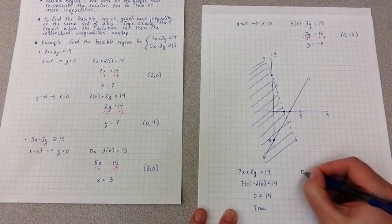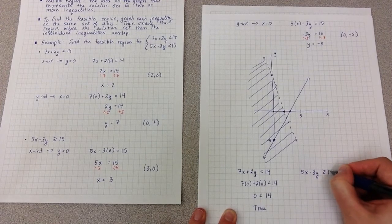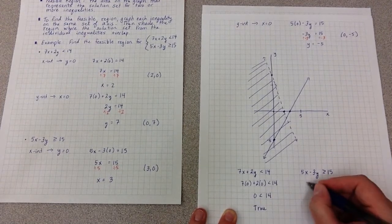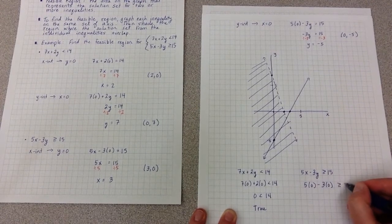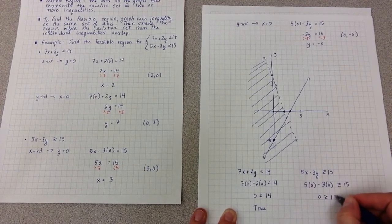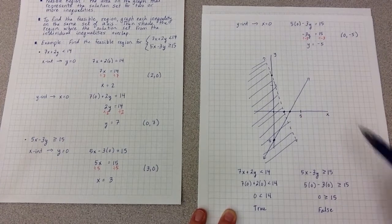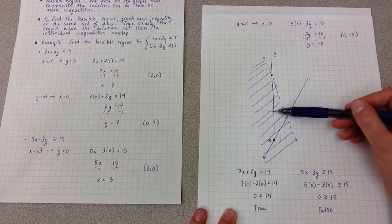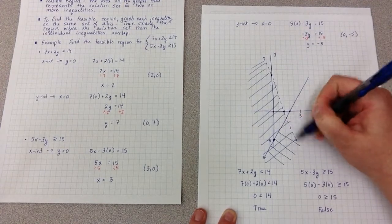My second equation is 5x minus 3y is greater than or equal to 15. Again, I'm going to plug in my favorite point, because the line doesn't go through 0, 0. I end up with 0 is greater than or equal to 15, but this is false. So for my second line, I don't want to color the side with 0, 0. I want to shade the other side.